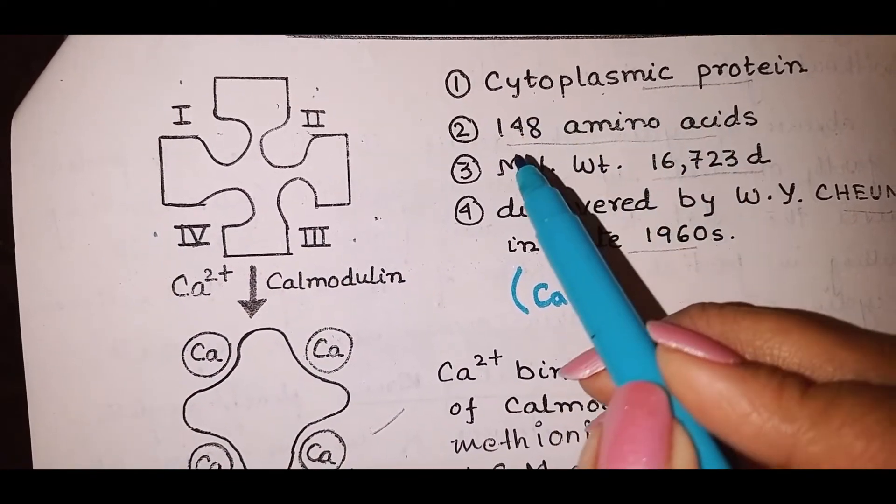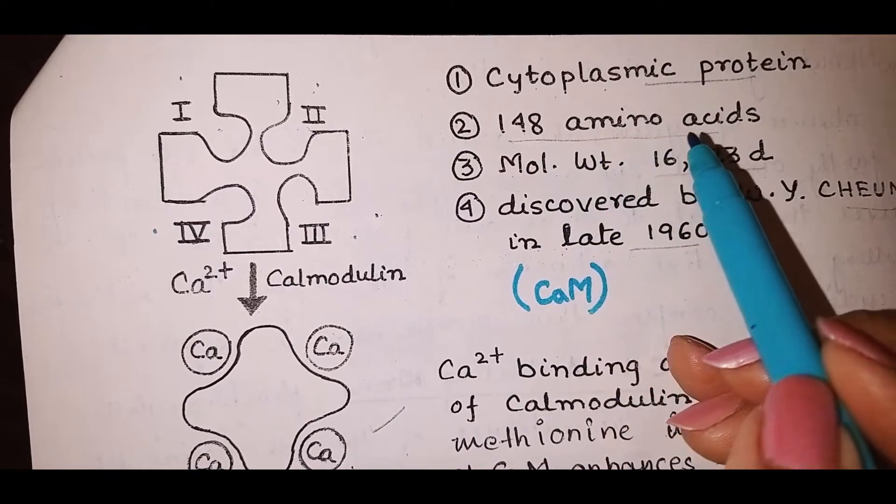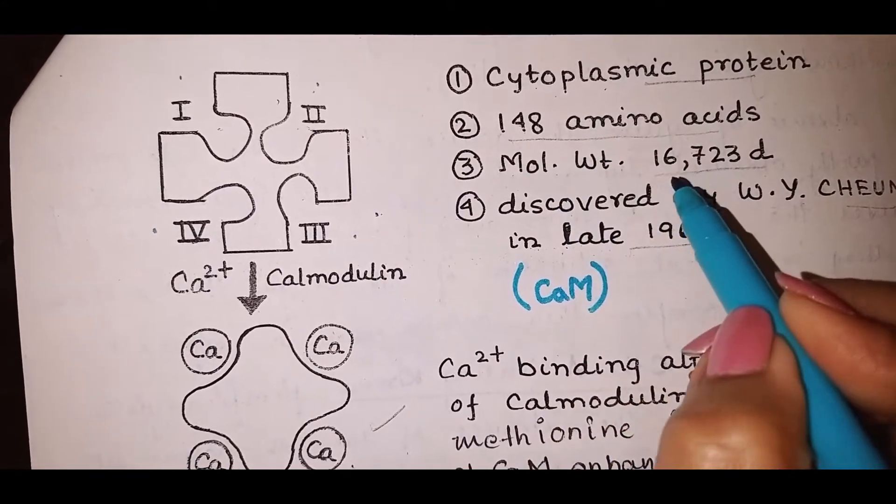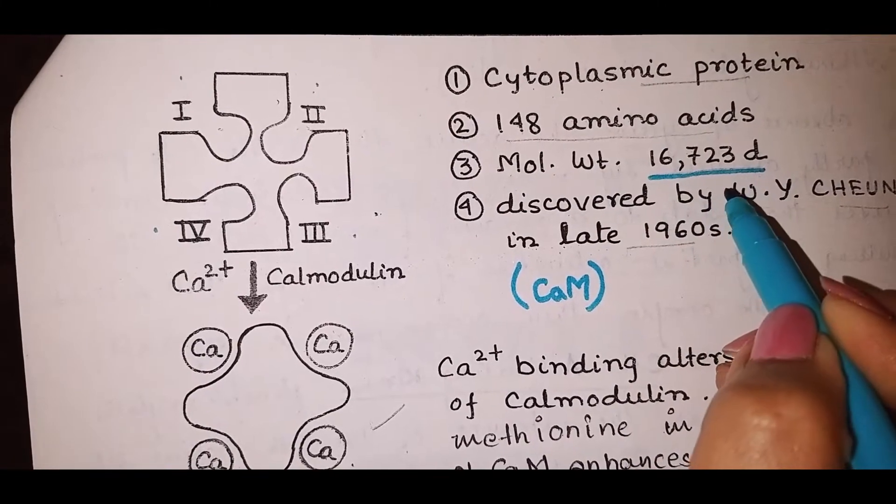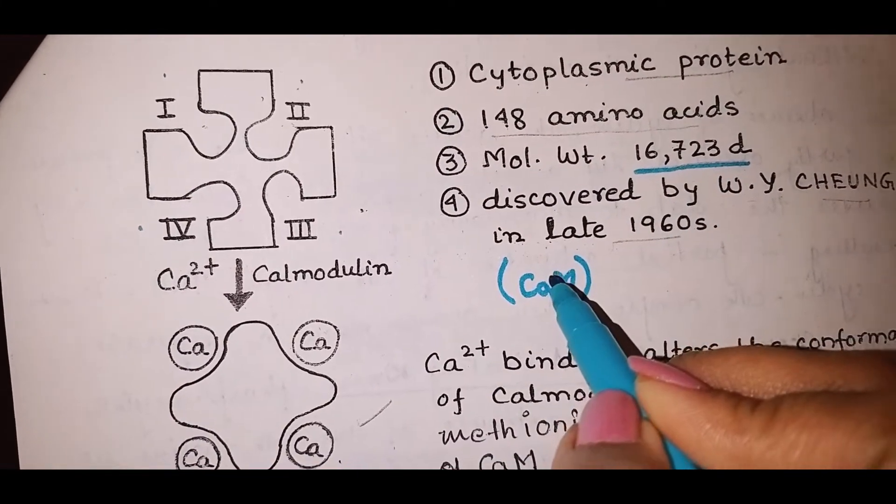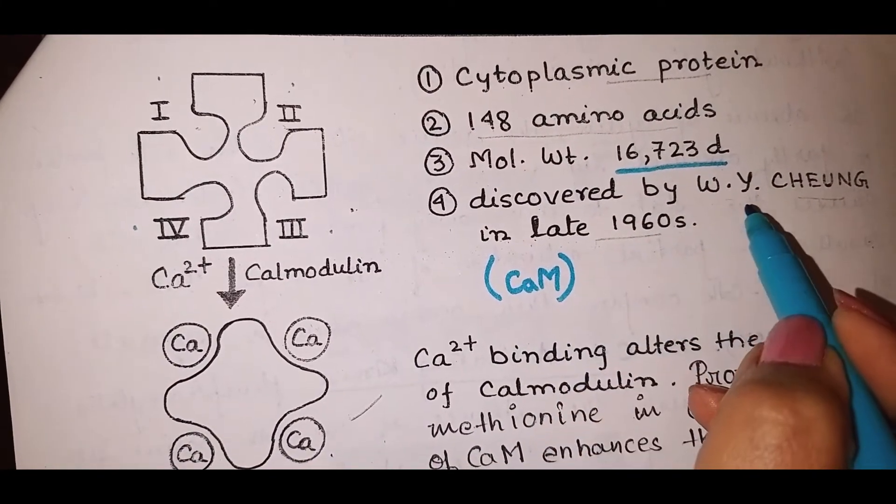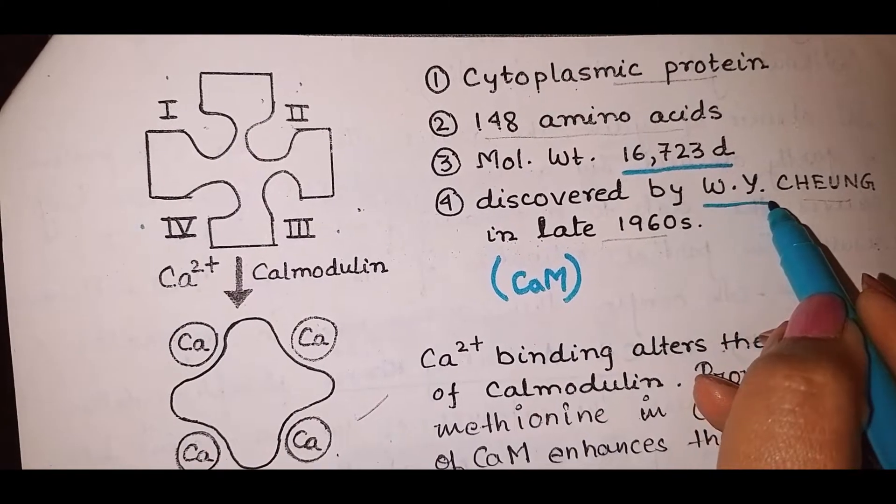It's a cytoplasmic protein with 148 amino acids. Molecular weight is 16,723 daltons. It was discovered by W.Y. Cheung in late 1960s.